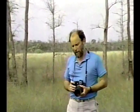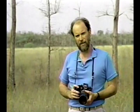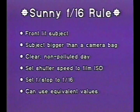There are two ways to determine correct exposure: you can estimate the light or you can meter the light. Out of doors, estimating the light is difficult because the light is always changing, except in one situation — bright sunlight. Memorize this: it's called the Sunny F-16 rule. Correct exposure anywhere in the world for a front-lit subject, bigger than a camera bag, on a clear, non-polluted day, is the shutter speed closest to the ISO of the film at F-16 or any equivalent value.